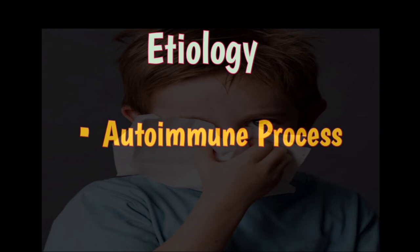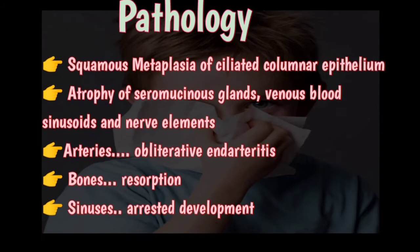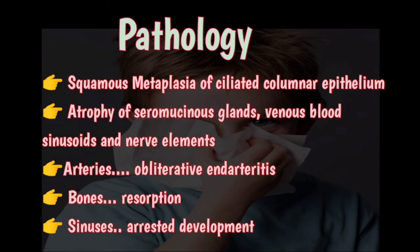In the autoimmune process, the body reacts with a destructive process to the antigens released from the nasal mucosa. Viral infection or some other unspecified agents may trigger antigenicity of the nasal mucosa. Regarding the pathology of primary atrophic rhinitis, the ciliated columnar epithelium of the nasal mucosa is replaced by squamous epithelium, so there is squamous metaplasia of ciliated columnar epithelium.